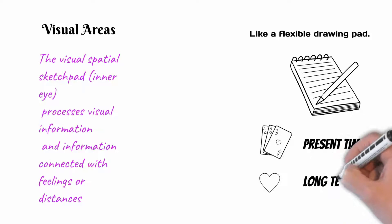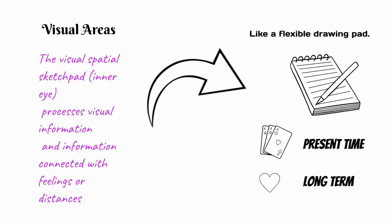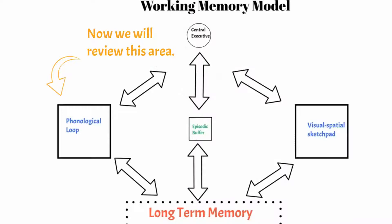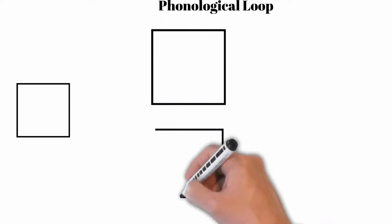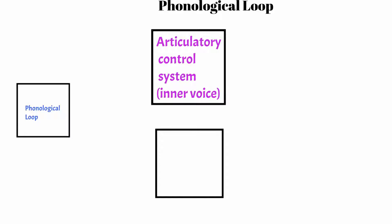Separately, there are the auditory systems. The phonological loop is an area that processes sound. There are two sub-areas. The articulatory control system, inner voice, and the phonological store, the inner ear.